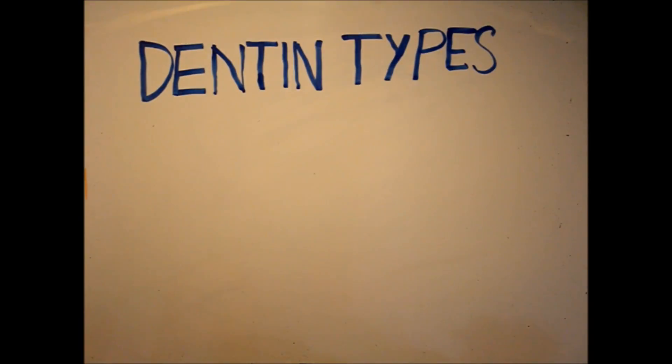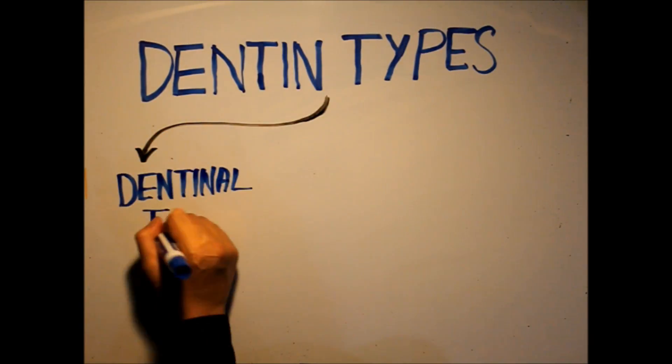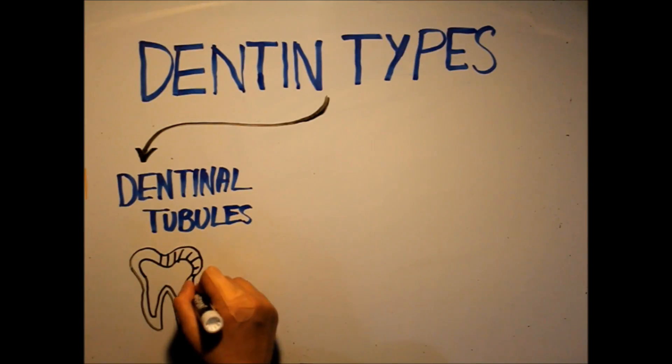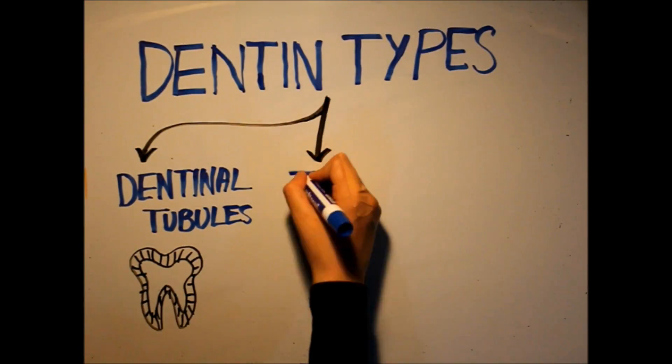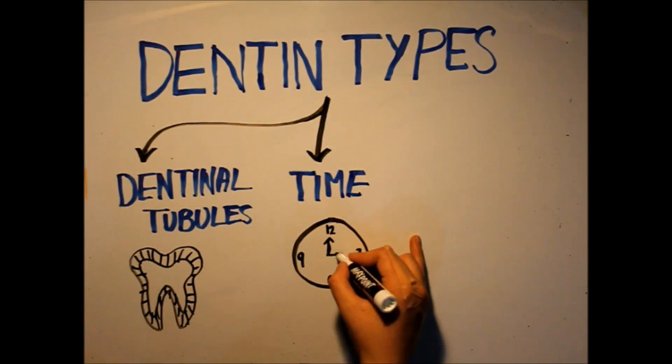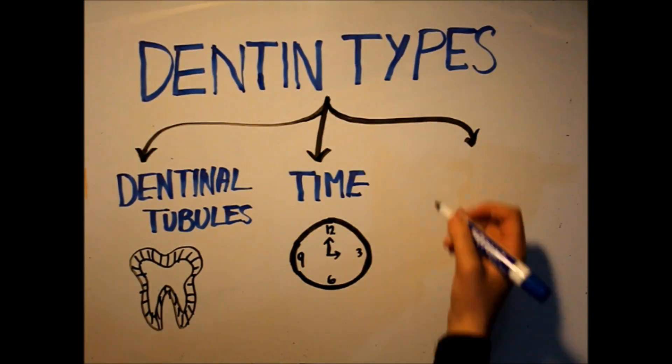Now that we've revised the basics about dentin, let's move on to the types of dentin. Dentin is classified according to the dentinal tubules, the time of formation, and response to injury.